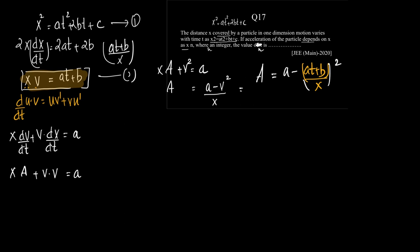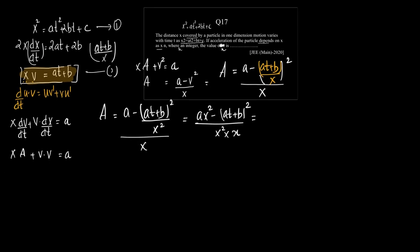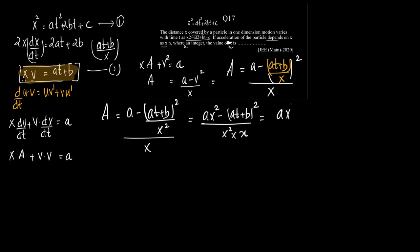The whole square, divided by x. So A = [a · x² − (at + b)²] / x³. Opening the bracket in the numerator: this becomes a · x² − a²t² − b² − 2abt, all divided by x³.